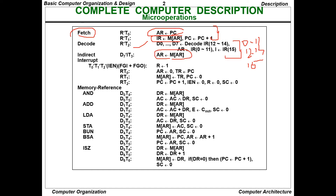For indirect addressing, M[AR] goes to AR at T0-T1-T2 with the condition IEN · (FGI + FGO) setting R to 1. In the interrupt cycle at RT0, RT1, RT2: PC→DR, R→0, PC→0, and TR→M[AR]. The sequence counter is set to 0, R is set to 0, IEN is set to 0, and PC is incremented. IEN is cleared to 0 because whenever an interrupt is resolved the IEN flag must be cleared.